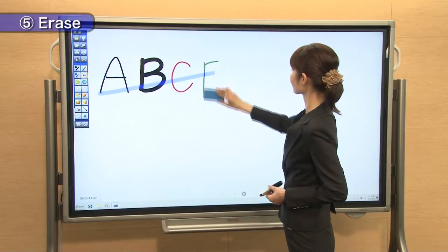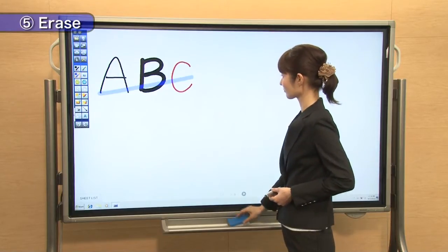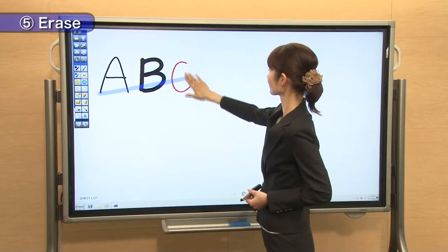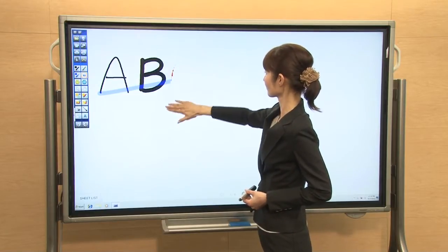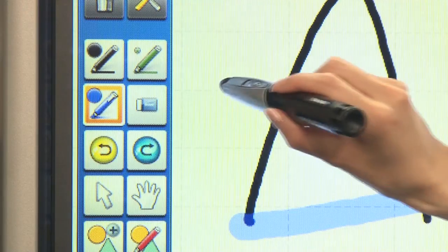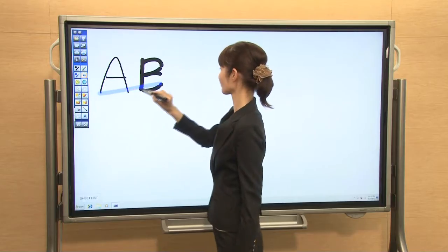Use the whiteboard cleaner to erase what you draw, or use your hand. Touch this icon to erase with the pen.